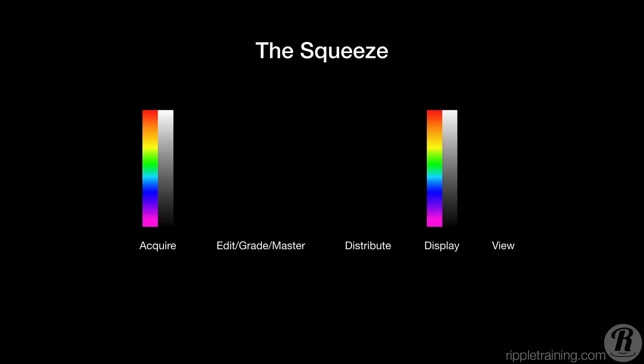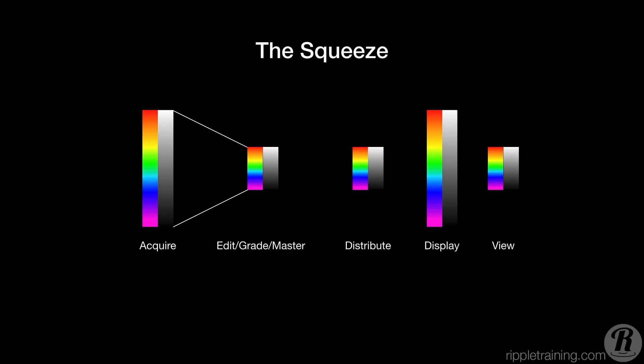HDR has the ability to retain detail in very bright areas like specular highlights, while still capturing detail in dark shadow areas, technically up to 10,000 nits. The trick is in keeping that full dynamic range through editing and distribution. The broad availability of HDR-capable television sets over the past several years is driving this transition from SDR to HDR. And that's where we are.